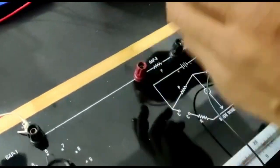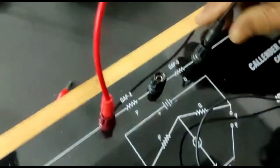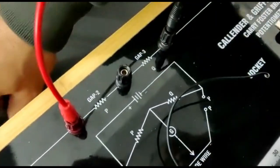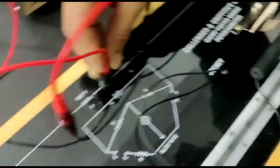We will connect the battery eliminator to the outer terminal of P and Q, and connect the galvanometer to the center of P and Q at G.